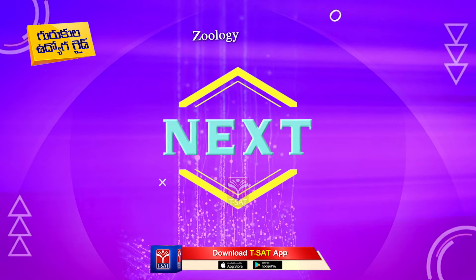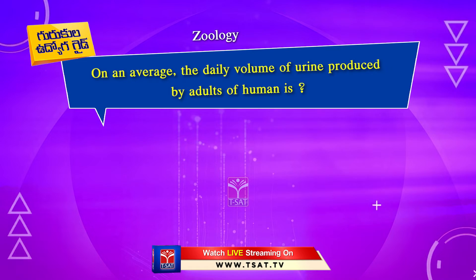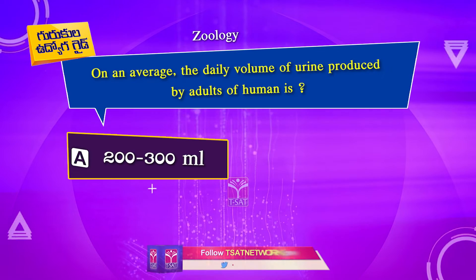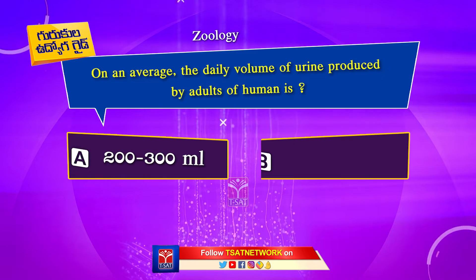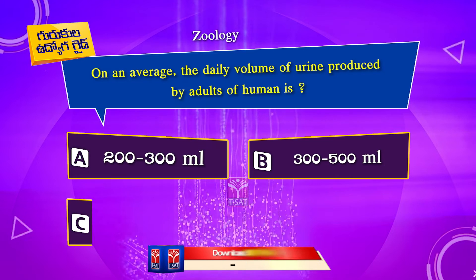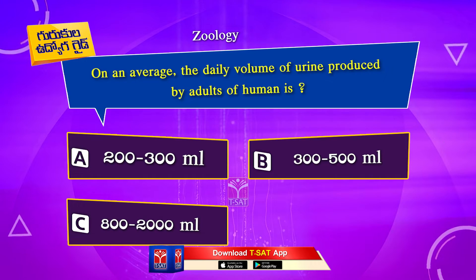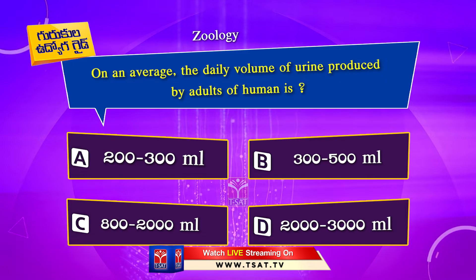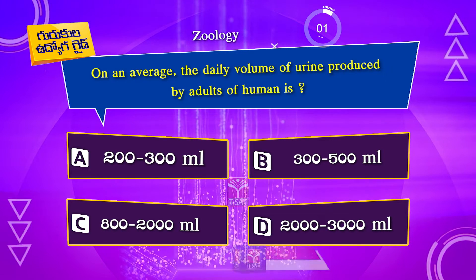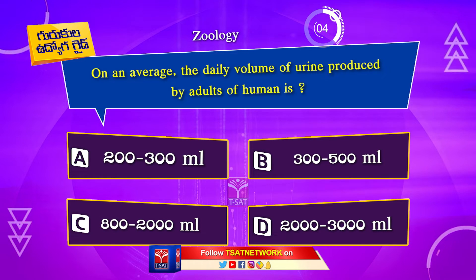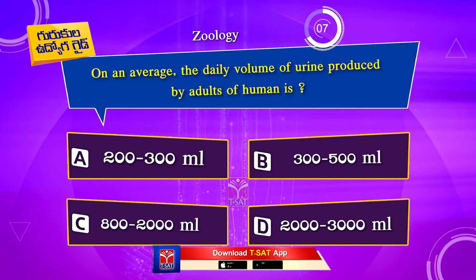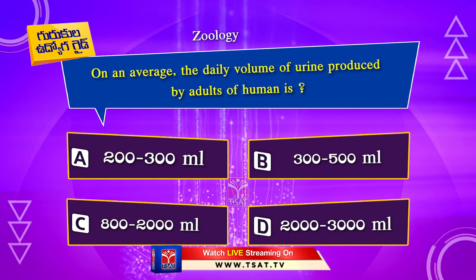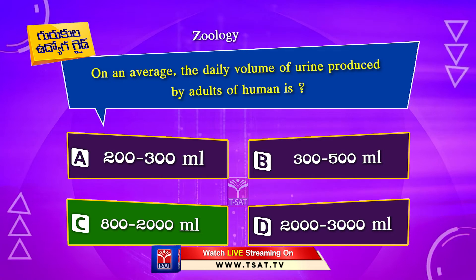Next question. On average, the daily volume of urine produced by adults is: Option A. 200–300 ml. Option B. 300–500 ml. Option C. 800–2000 ml. Option D. 2000–3000 ml. The correct answer is Option C. 800–2000 ml.